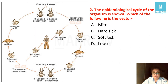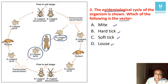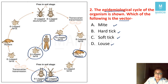Our next question was image-based: the epidemiological cycle was shown — what is the likely vector? Options were mite, hard tick, soft tick, and louse. Looking at the figure, a six-legged larva is infecting the human host, with eight-legged adult and nymph shown; the reservoir is rodents. Whenever a larva bites the human and transmits infection, think of scrub typhus. The vector for scrub typhus is the mite.